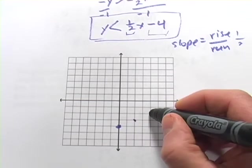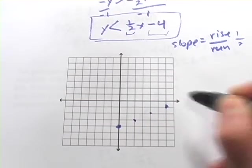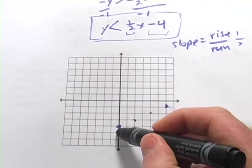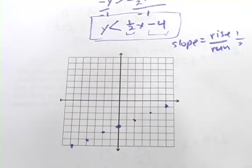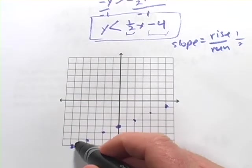So I could go up 1, 2 over to the right, up 1, 2 over to the right, up 1, 2 over to the right. Or I could go down 1 and 2 to the left, down 1 and 2 to the left. And you can see we've got our line. So let's dash this in.